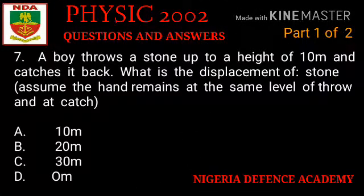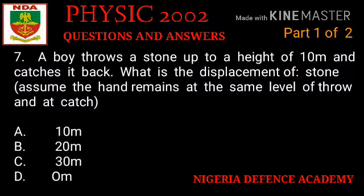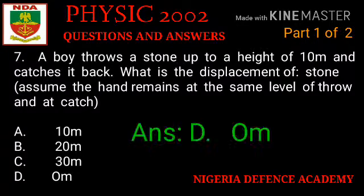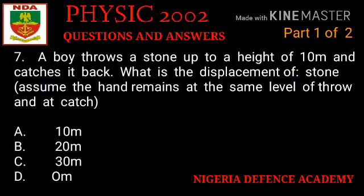Question number seven: a boy threw a stone up to a height of 10 meters and catches it back. What is the displacement of the stone? Assume the hand remains at the same level. Option A: 10 meters. Option B: 20 meters. Option C: 30 meters. Option D: 0 meters. The right answer is option D — 0 meters.